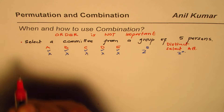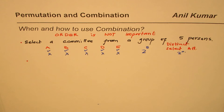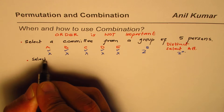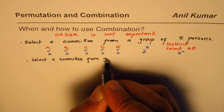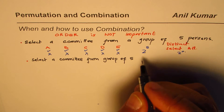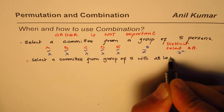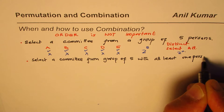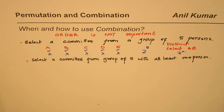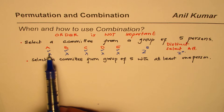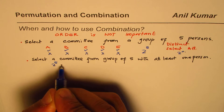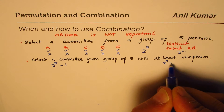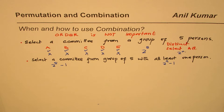Now let's modify this question: select a committee from a group of five with at least one person. When selecting a committee, it makes sense that there should be at least one person. The option of selecting none is no longer available, so we get one less than 2^n. In this case the result is 2^5 − 1, and the general solution is 2^n − 1.